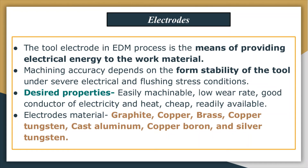Copper and graphite are the most commonly used electrode materials because of their easy machinability. Graphite electrodes with finer grains result in a low tool wear rate, better surface finish, and high metal removal rate.